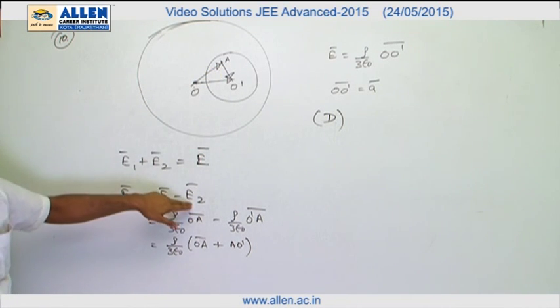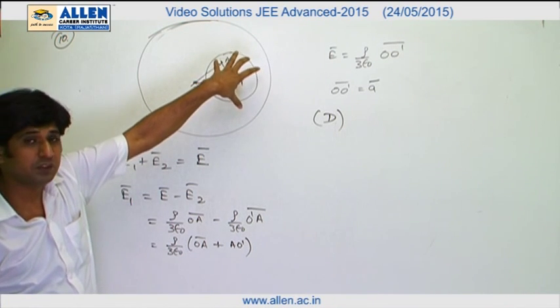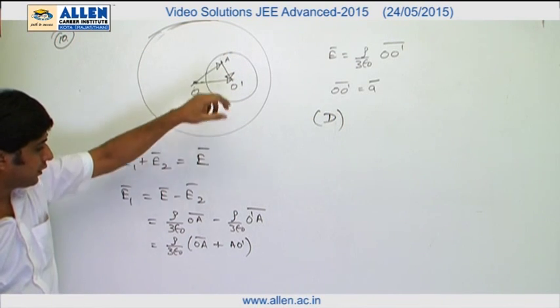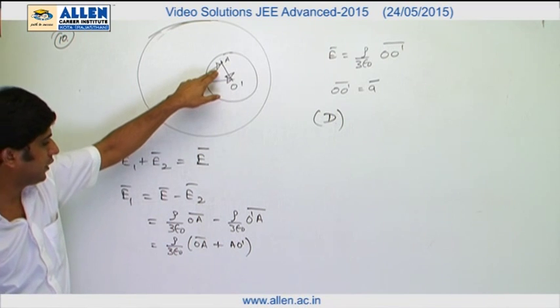E2 is the electric field intensity due to the material of the cavity, which is also spherical in shape. Therefore, we can write it as rho upon 3 epsilon naught O'A vector.